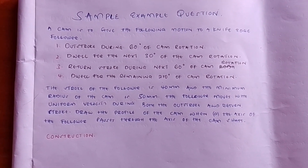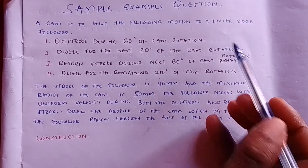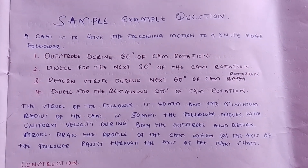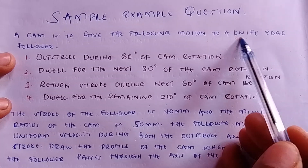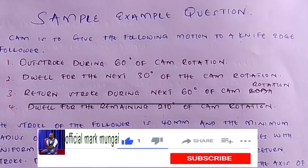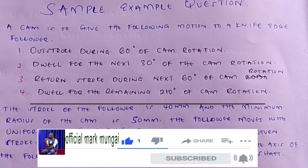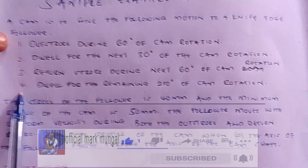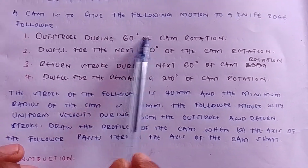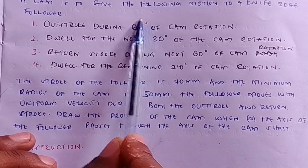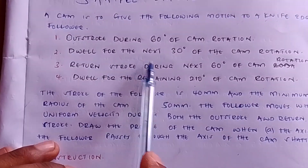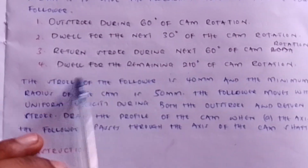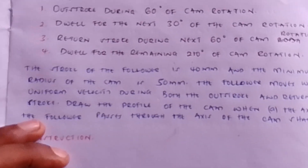The very first thing when you read your question — there are very important points you should identify. The first point is the follower: is it a flat-faced follower, a roller follower, or a knife-edge follower? In our question we identify a knife-edge follower, so we already know how the follower will look. The next thing to look for is the motion instructions — the outstroke, return stroke, and dwells, all given in degrees.